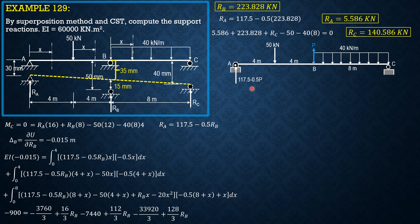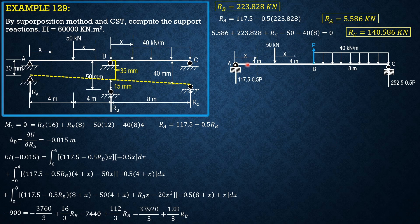We solve for the reactions in terms of P. RA = 117.5 minus 0.5P, because P is at the center. Therefore RC = 252.5 minus 0.5P, where 252.5 comes from 50 plus 40 times 8 minus 117.5, giving the contribution due to actual loadings. The contribution of P, being at the center, gives minus 0.5P. Our sectioning points are chosen accordingly, and the beam will deflect upward due to P.